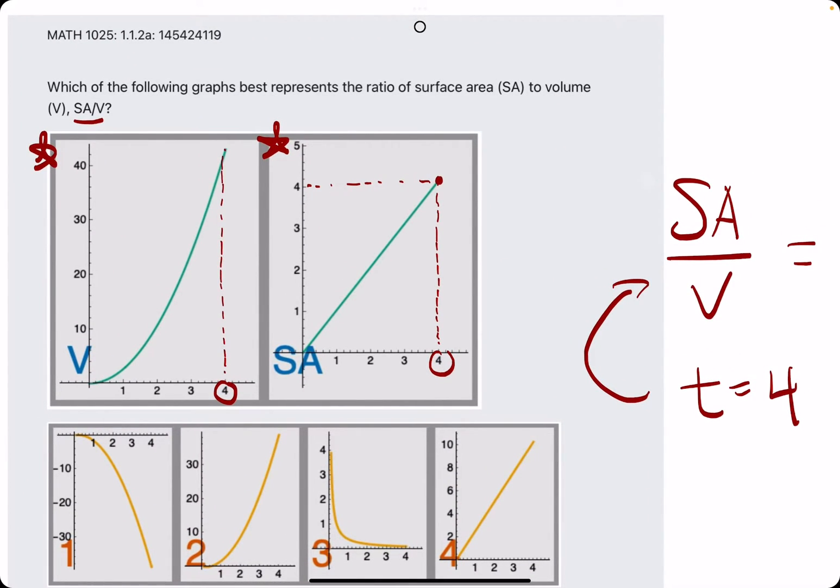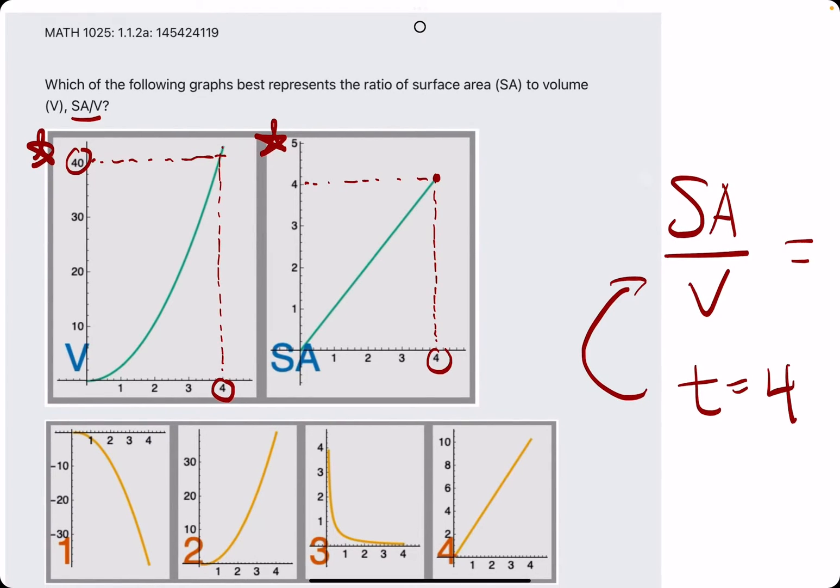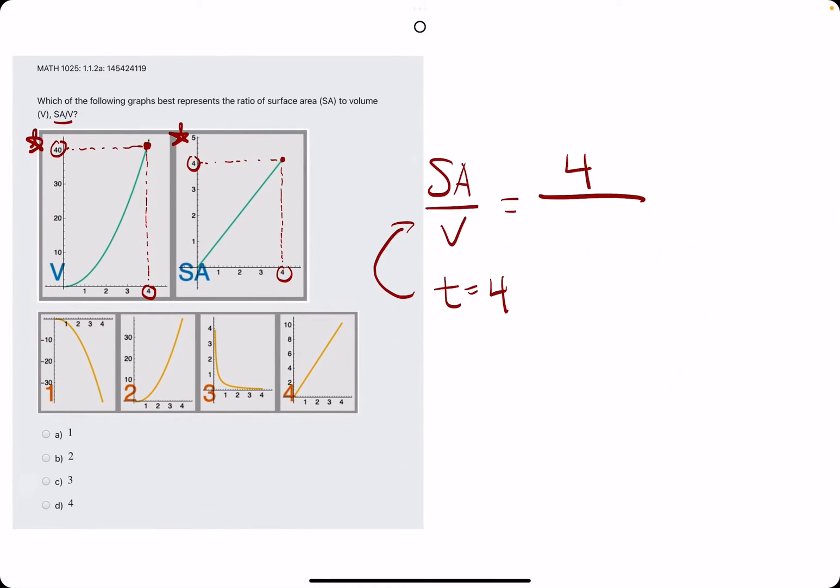And then we'll repeat the same process on the volume graph. So you can usually just use the highest Y value, or the one that lines up with time 4 for both of them. So I'll say it's 4 over volume value of 40. So if we reduce this, we get 1 tenth, basically a small decimal, 0.1.